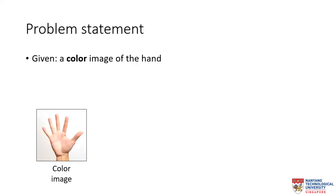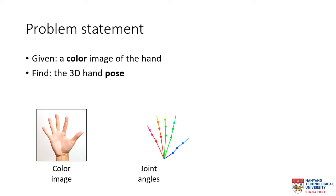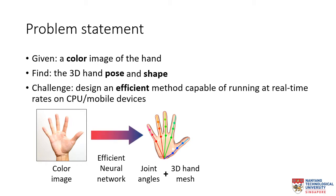In this work, we consider the problem where we are given an input color image of the hand, and we aim to find the 3D hand pose in terms of joint angles, as well as the 3D hand shape represented by a 3D hand mesh. We focus on addressing one of the main challenges, which is to design an efficient method capable of running at real-time rates on CPU or mobile devices.